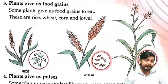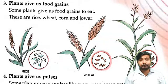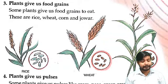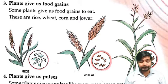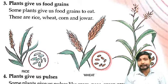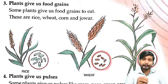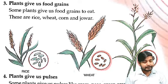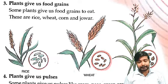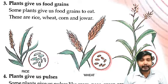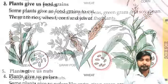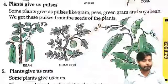Then plants give us food grains. Plants also give us food grains. Some plants give us food grains to eat, like wheat, corn, and jowar.